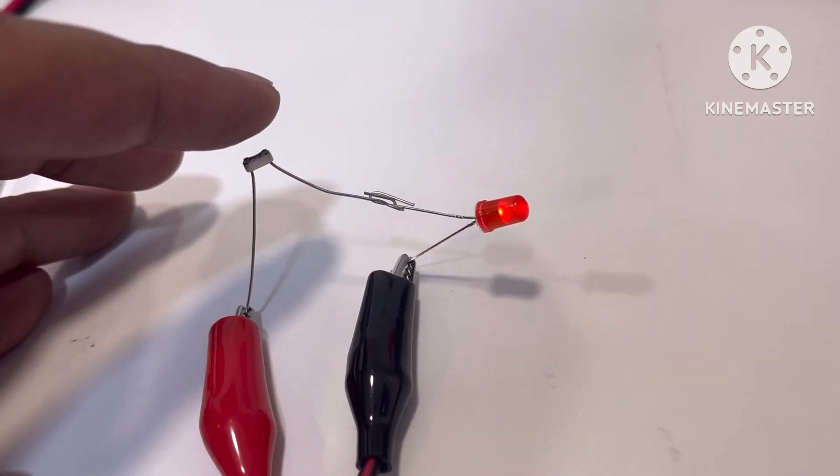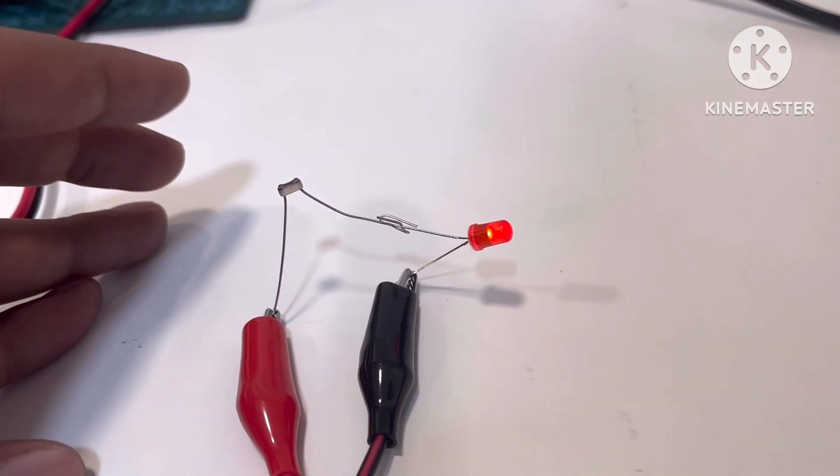This is the simplest circuit of testing an LDR. When I'm covering the LDR with my hand, darkness increases the resistance of LDR. As a result, LED becomes dull.